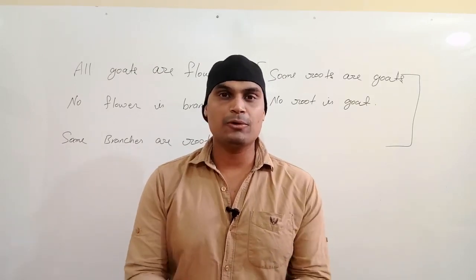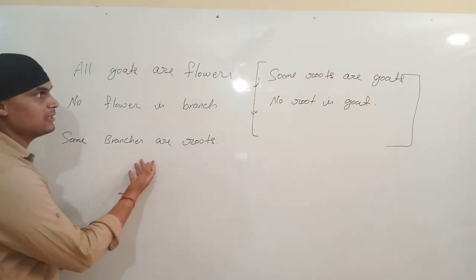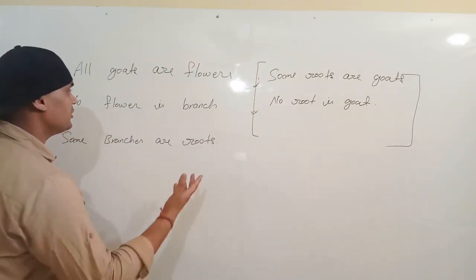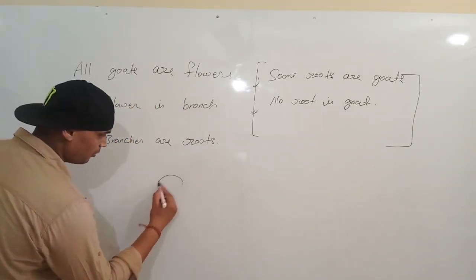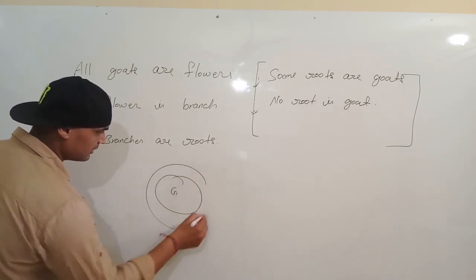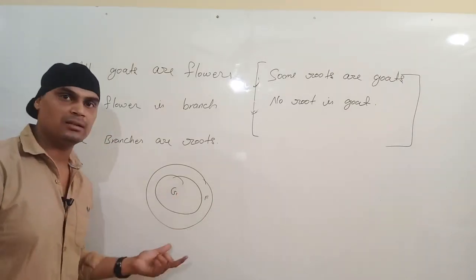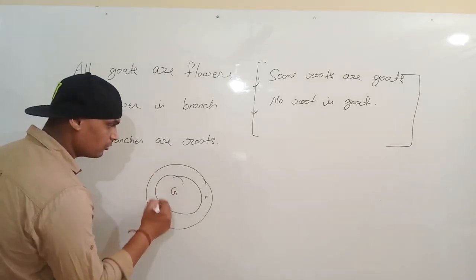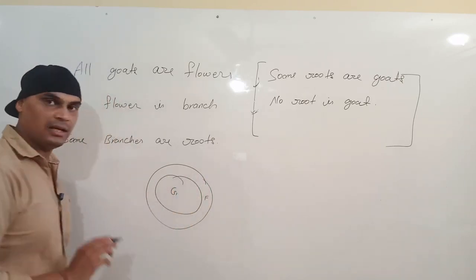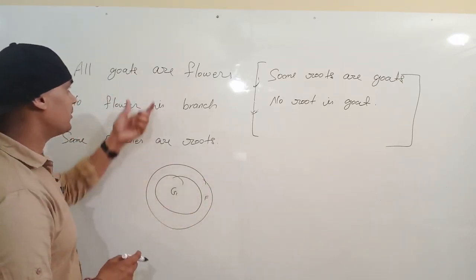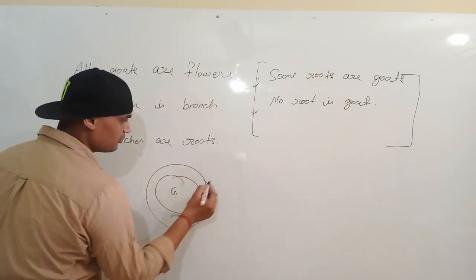Okay friends, let's look at question number one. The statement is: 'All goats are flowers.' This means all goats fall under flowers — so in the diagram, goats go inside flowers. However, this figure can also be drawn where goats are completely overlapping with flowers, or goats sit inside flowers. Both diagrams are possible for this statement.